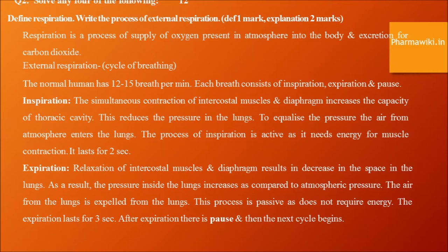Write the steps involved in urine formation and describe selective reabsorption. There are three processes of urine formation: glomerular filtration, selective reabsorption, and tubular secretion. Selective reabsorption is the process by which the composition and volume of the glomerular filtrate is altered during its passage through the convoluted tubules, loop of Henle, and collecting tubule.